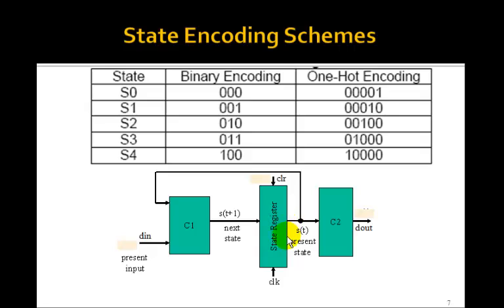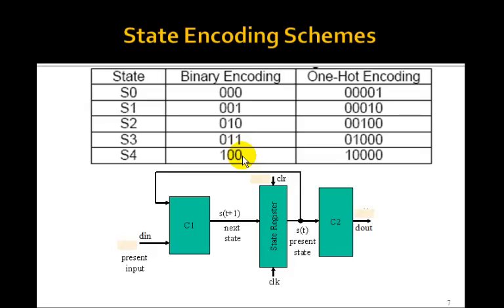You might be wondering how the outputs of the state registers are actually encoded. Since we had five states in our example, we can label them S0 through S4. We could use binary encoding because with three bits I can represent five states — just label them the binary numbers 0, 1, 2, 3, 4. So we could have three flip-flops. If you're in state S0 the output would be 0,0,0; if you're in state 4 it would be 1,0,0. That's one way to encode the state register.